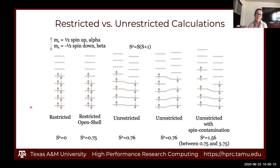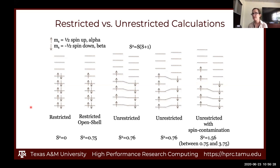There was a question about why we calculate the S² value. Calculating S² gives you an idea of the purity of your spin state — whether you truly have the number of unpaired electrons you asked for. Why is S² equal to S(S+1)? That goes to quantum theory and is really beyond the scope of today's lecture — you'd need to explore that in physical chemistry and quantum chemistry.